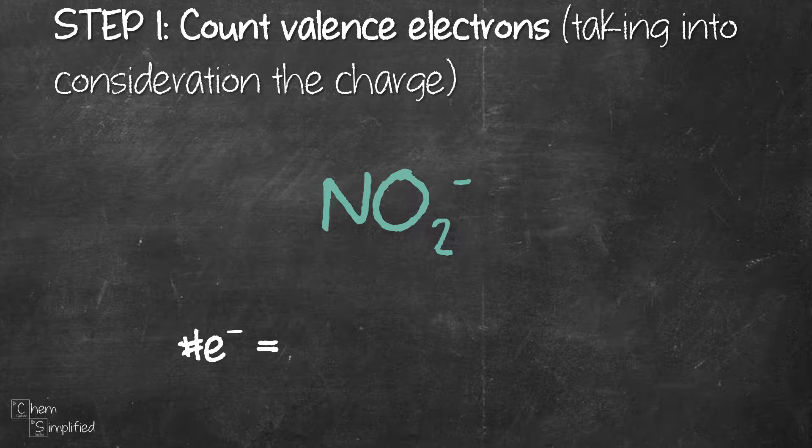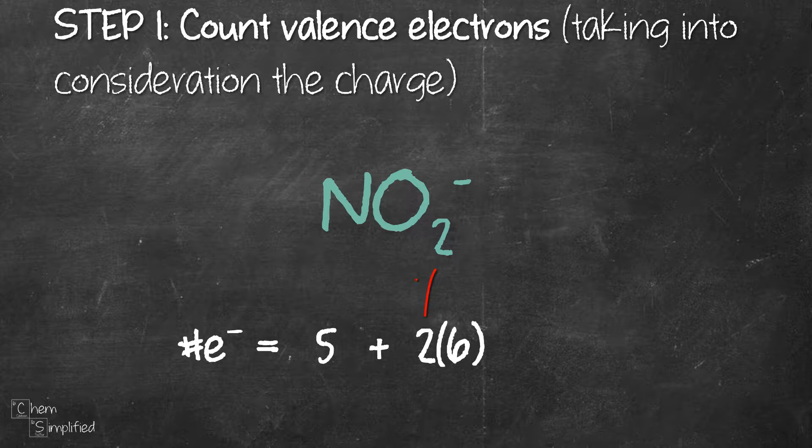Number of electrons equals 5 plus 2 times 6. We times 2 because there are two oxygen.